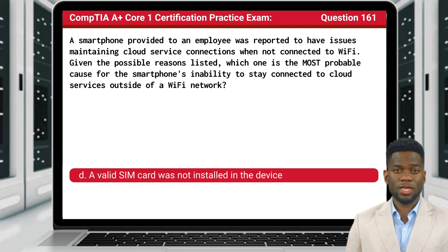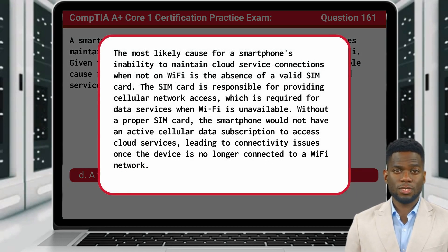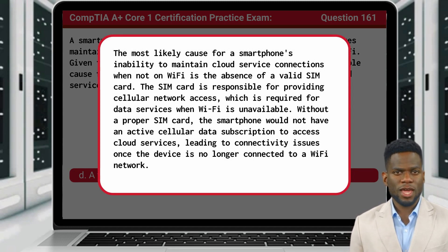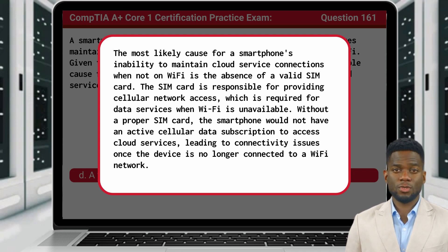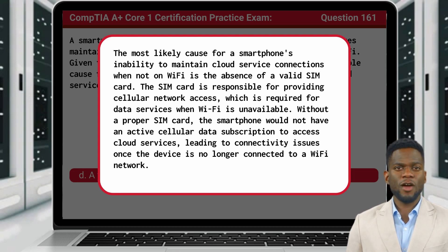The answer is D: a valid SIM card was not installed in the device. The most likely cause for a smartphone's inability to maintain cloud service connections when not on Wi-Fi is the absence of a valid SIM card. The SIM card is responsible for providing cellular network access, which is required for data services when Wi-Fi is unavailable. Without a proper SIM card, the smartphone would not have an active cellular data subscription to access cloud services, leading to connectivity issues once the device is no longer connected to a Wi-Fi network.